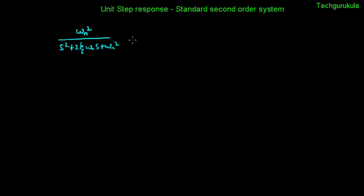Why is it called a standard second order system? There are two reasons. First, the transfer function is represented with two parameters: omega_n and zeta, and this notation is consistently used in the literature. Second, this transfer function doesn't specifically represent an electrical, mechanical, hydraulic, or thermal system — it is a very generic one. So we call this a standard second order system transfer function.